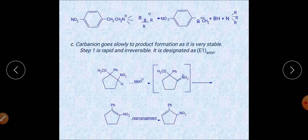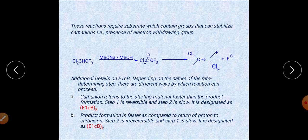From all examples, the key conclusion is that a carbanion is formed, so factors that stabilize the carbanion enhance the rate of E1cb reaction. For example, an NO2 group or other electron-withdrawing groups attached to the carbon will stabilize the carbanion. A CF3 group and chlorine — both electron-withdrawing — stabilize the carbanion formed, making that reaction faster.